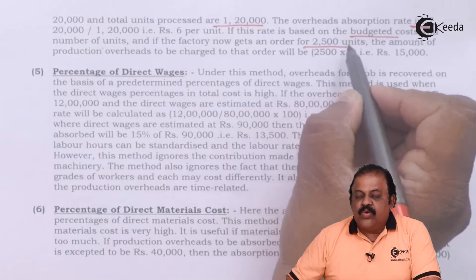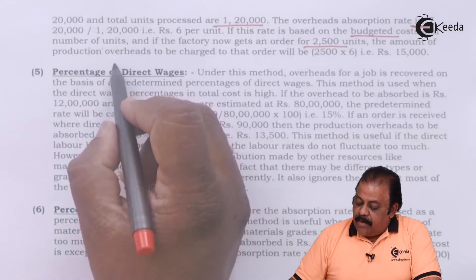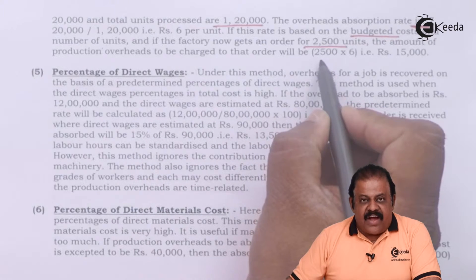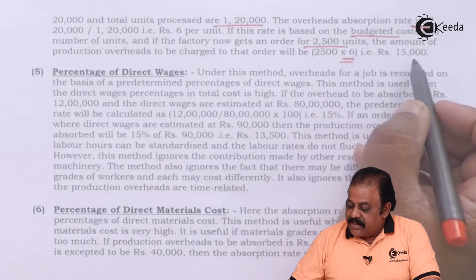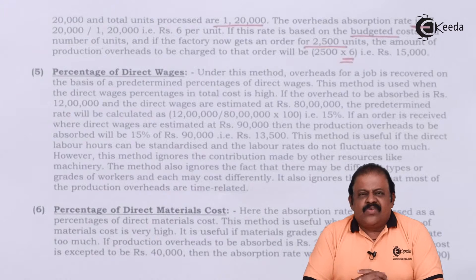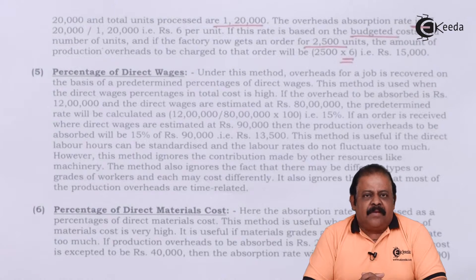If the factory receives an order for 2,500 units, the production overheads charged to that order will be 2,500 units multiplied by the rate of Rs. 6, which equals Rs. 15,000. This is how the unit rate, calculated based on some parameter, is applied to any particular job.